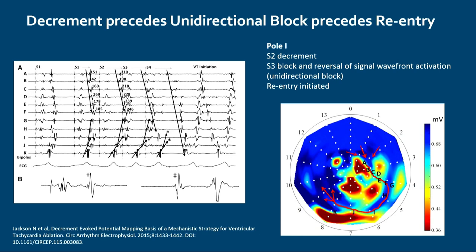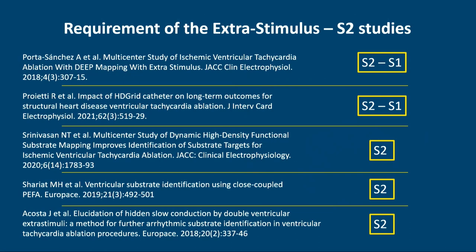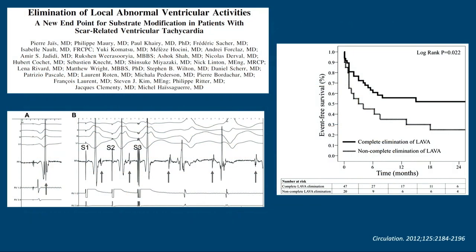Contemporary studies on decrement use the coupling interval between an S1 and S2 to unmask late potentials. There is a clear distinction between studies focused on the actual difference in EGM prolongation between S1 and S2 (true decrement) versus studies focused on electrogram characteristics of the S2 alone. Piaget in 2012 showed beautifully—without formal analysis—that with S1, S2, and S3, late components were unmasked.